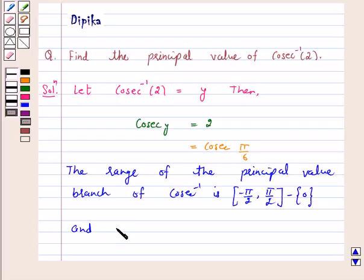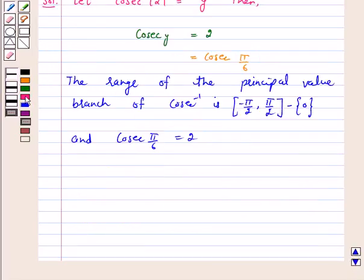And cosecant pi by 6 is equal to 2. So therefore, the principal value of cosecant inverse 2 is pi by 6.